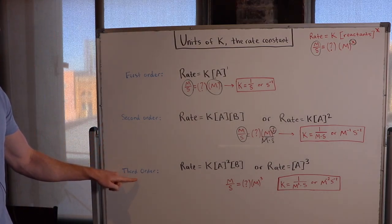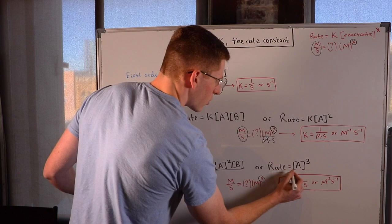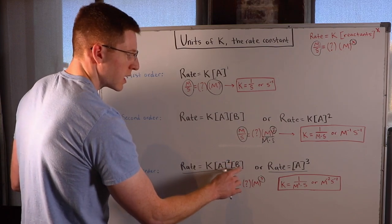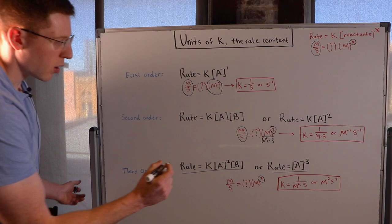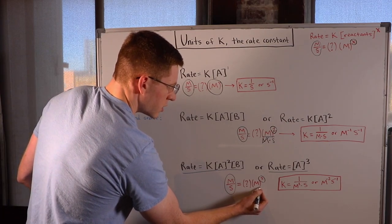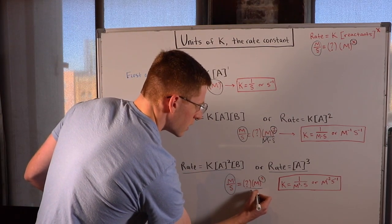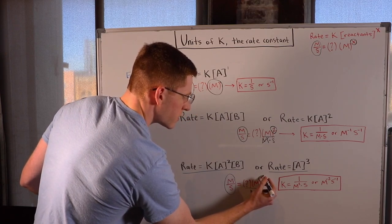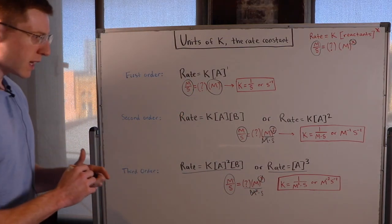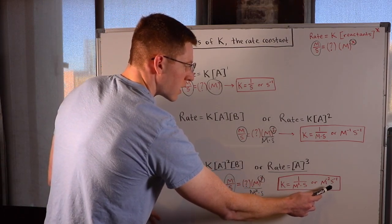Let's look at an overall third order reaction. In this case we have molarity cubed. These could be A squared times B, B squared times A, A cubed, B cubed — but the overall exponent is three. Rate is always molarity per second, equals some units for K times molarity cubed. If I divide by molarity squared times seconds, the cubed turns into a one, the M squared cancels out, and I'm left with molarity per second. So in an overall third order reaction, the units of K have to be one over molarity squared times seconds, or M⁻²s⁻¹.